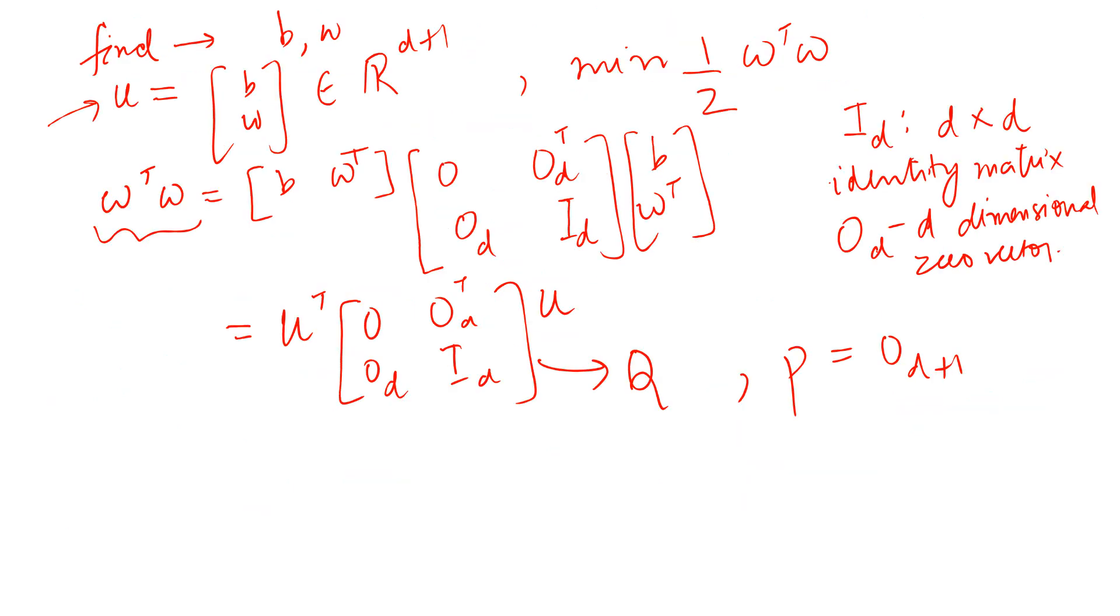Okay, so this is my objective function. What about my constraints? Because I have to bring my constraints also to this form, this AU greater than or equal to C. And if I think about my constraints, my nth constraint, any constraint in my entire data points, was something like this, greater than or equal to 1. This was my original constraint.